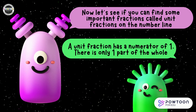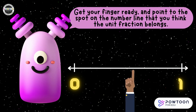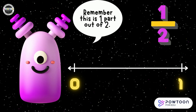Let's see if you can find some important fractions called unit fractions on the number line. A unit fraction has a numerator of one — there is only one part of the whole. Get your finger ready and point to the spot on the number line that you think the unit fraction belongs. Remember, this is one part out of three.